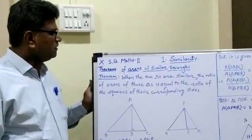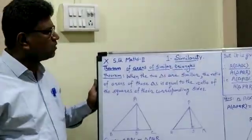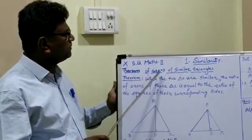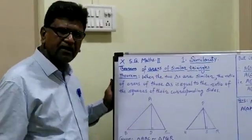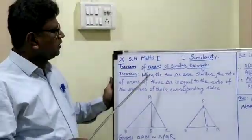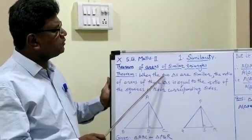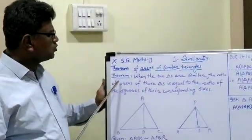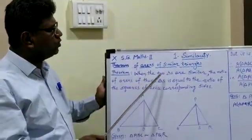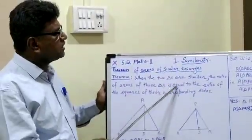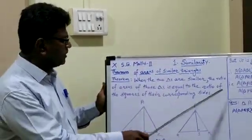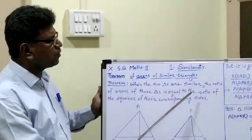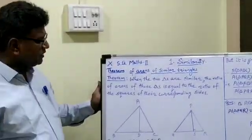Students, the last topic of similarity is the theorem of areas of similar triangles. When two triangles are similar, the ratio of areas of those triangles is equal to the ratio of the squares of their corresponding sides.